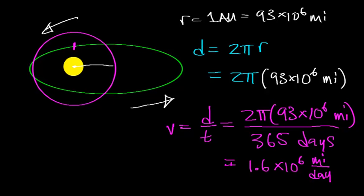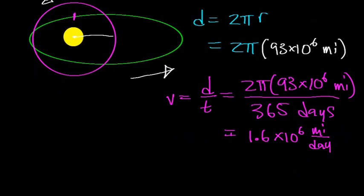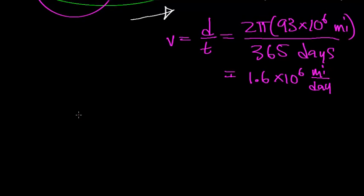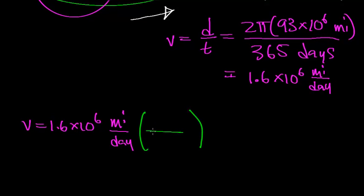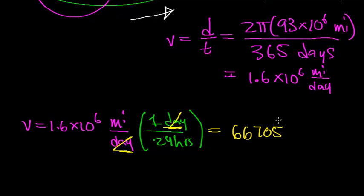Now, no one ever gives you a velocity in terms of miles per day. So what we'd really like to know is how fast this is in actual miles per hour. So we know the velocity is 1.6 × 10^6 miles per day. And now what we're going to do is we're going to multiply this by a conversion factor. We know that one day has exactly 24 hours. And so what you should see is that this unit a day cancels out with this unit a day. And then you get 1.6 × 10^6, and we're going to divide that by 24, which works out to be about 66,705 miles per hour.